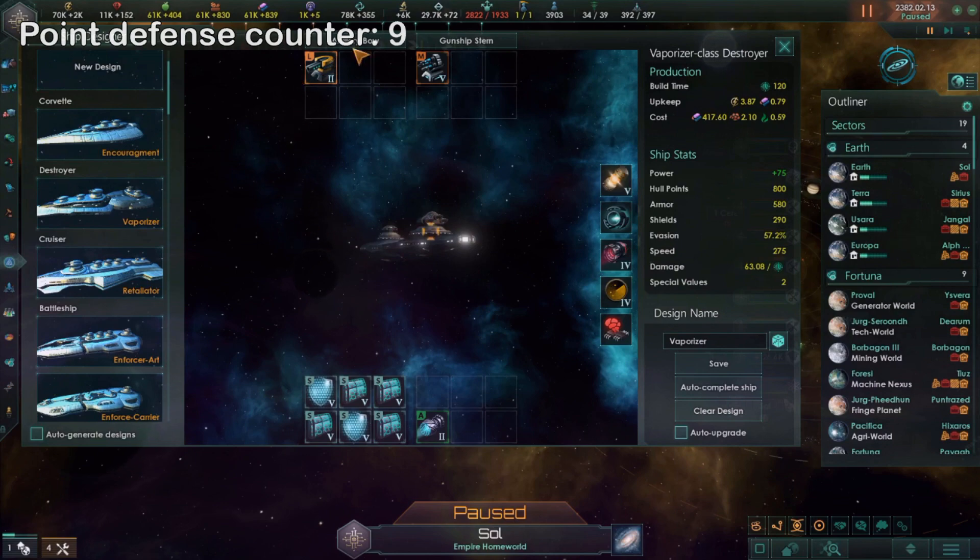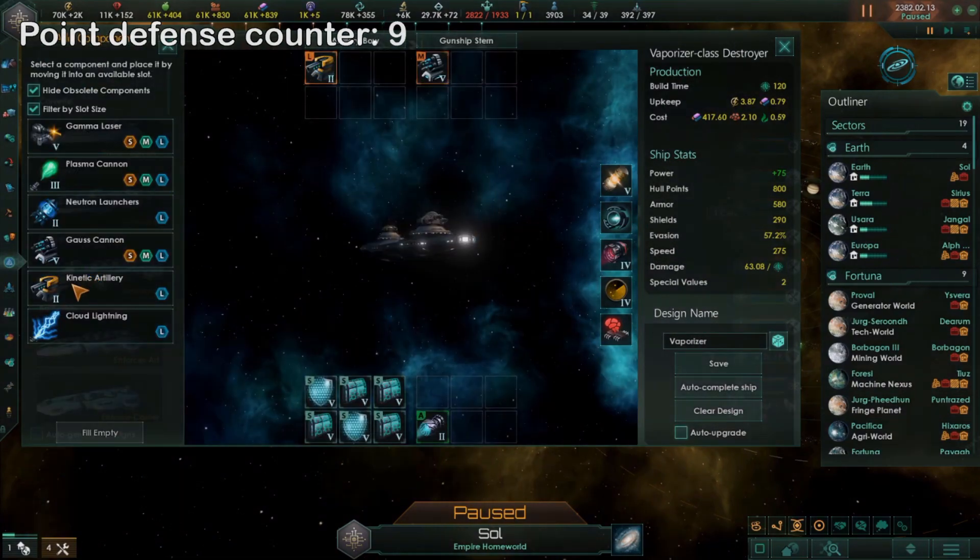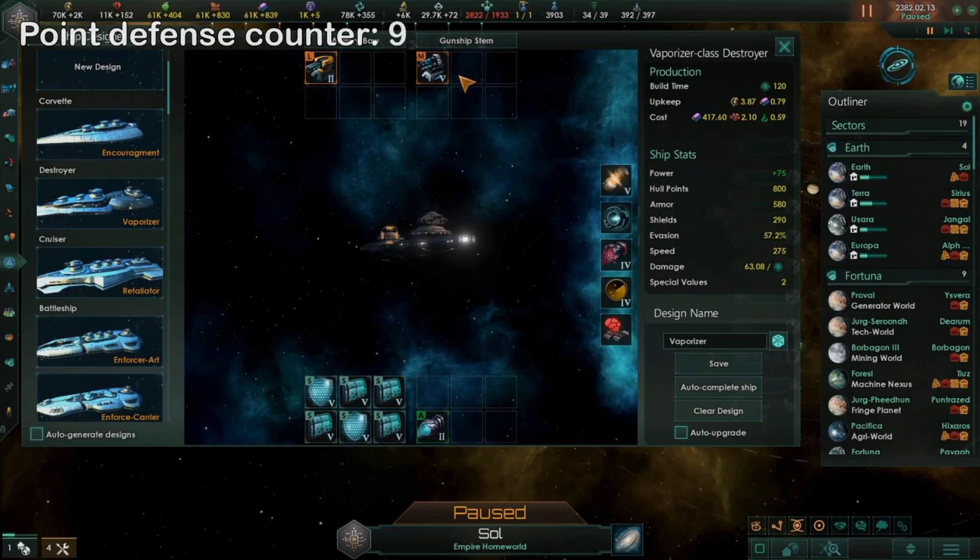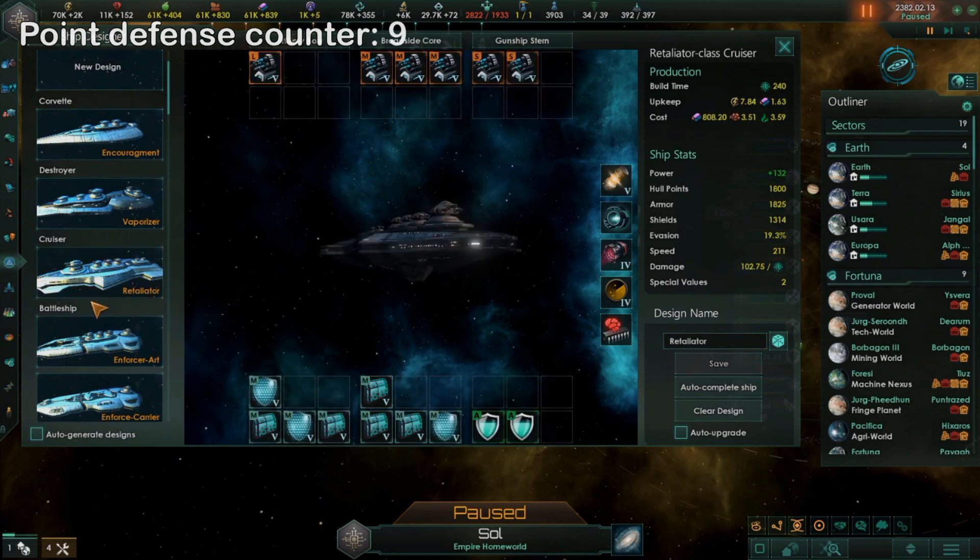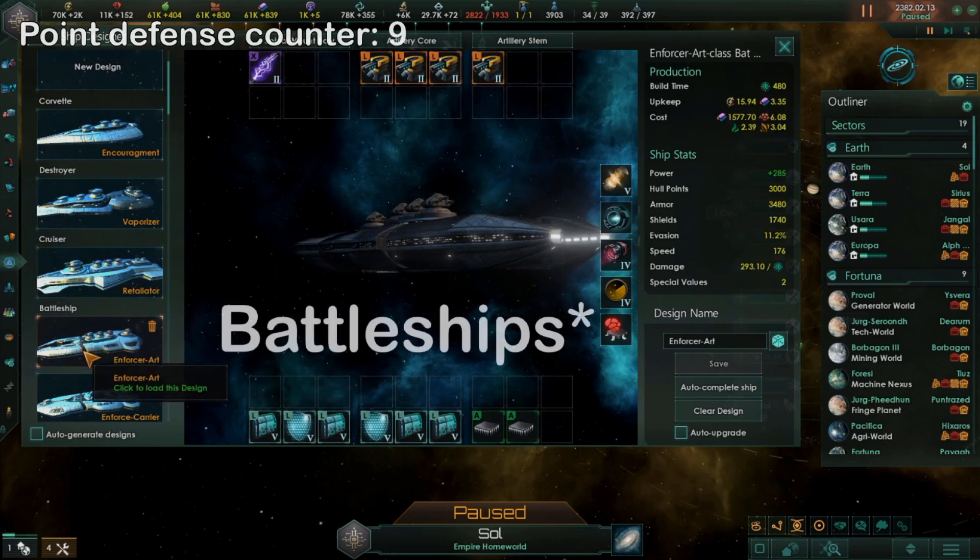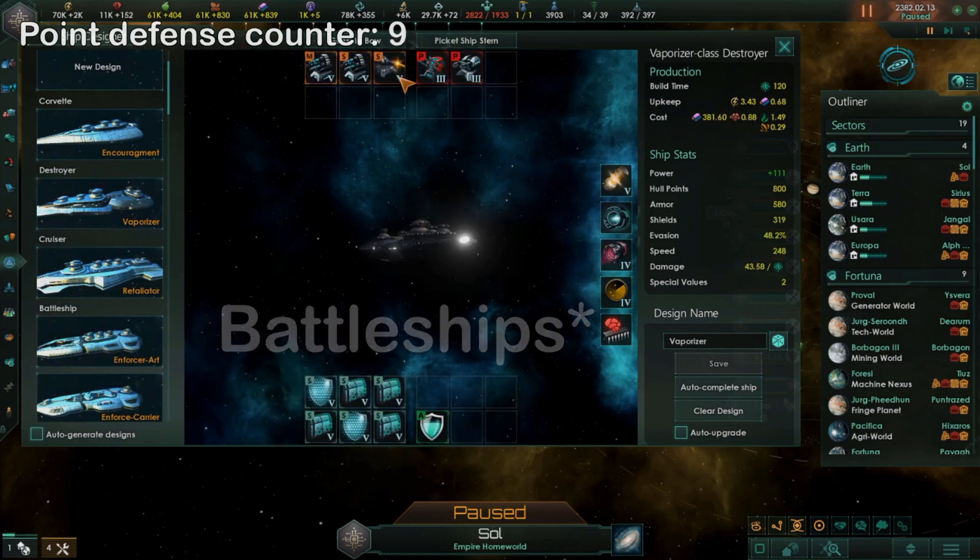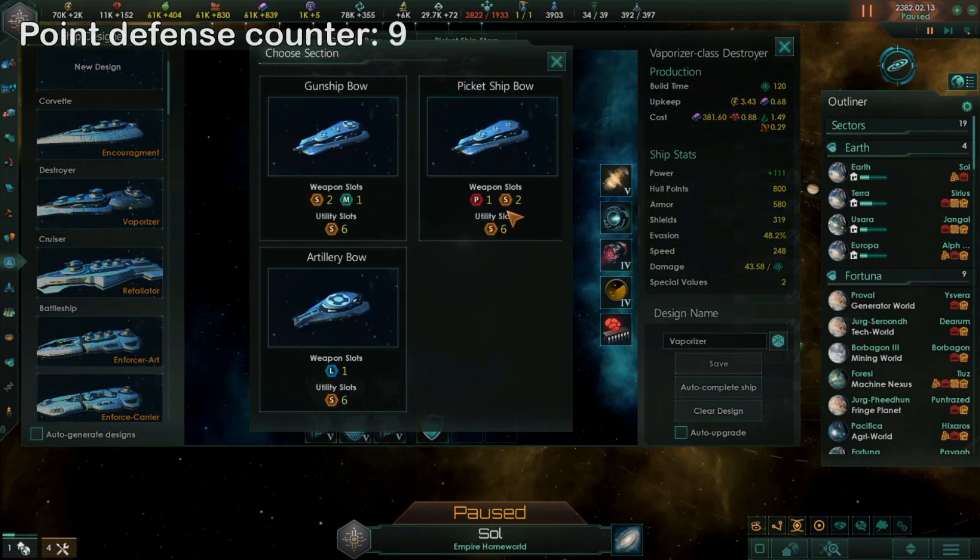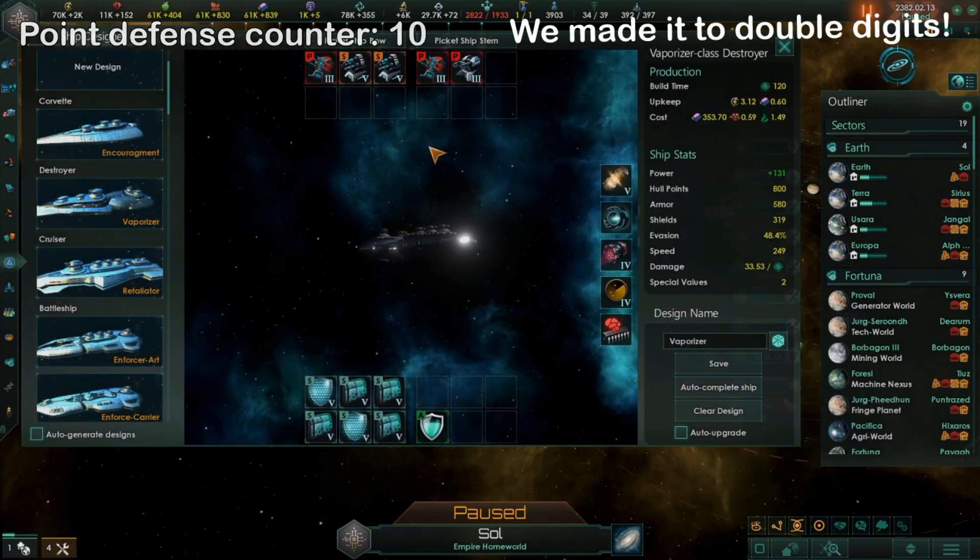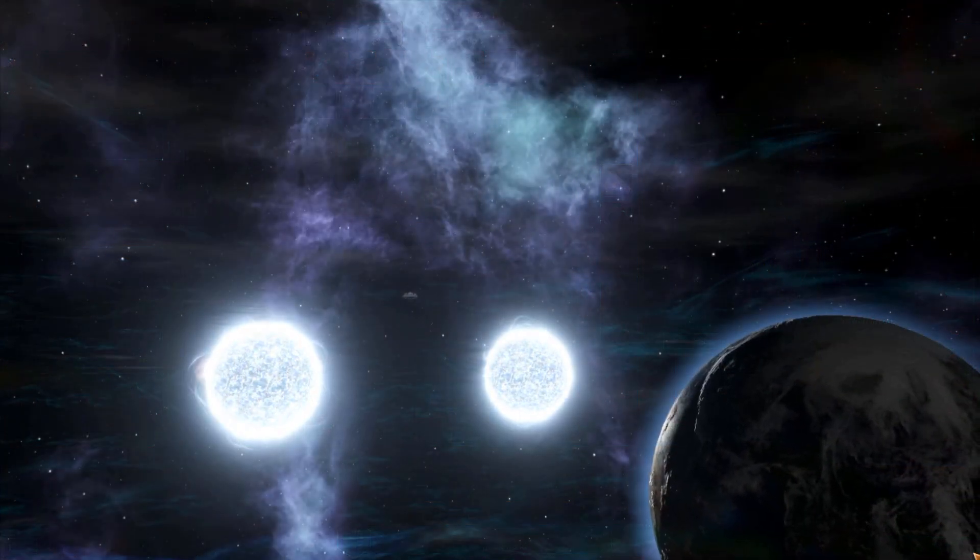What I would do is upon getting destroyers, use the artillery bow with a large kinetic weapon of the highest level you have and set them as far back as possible while remaining in range. Once you unlock cruisers, or if you don't like cruisers once you get battleships, switch your destroyers to picket ship bows and sterns with your preferred point defense, and build new ones when your opponent uses torpedoes or missiles.